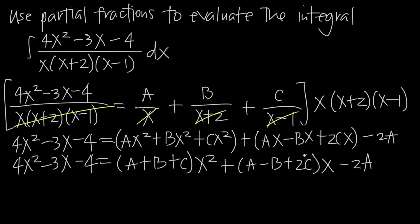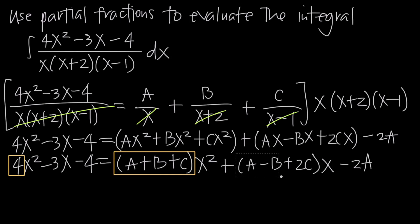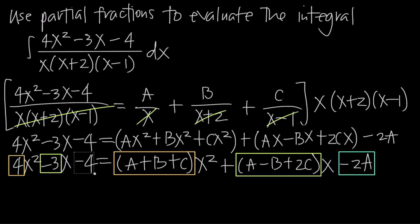We equate coefficients from the left and right hand sides. You can draw boxes around the coefficients to make this clearer. The x squared coefficient gives us: 4 equals A plus B plus C. The x coefficient gives: negative 3 equals A minus B plus 2C. And matching the constants gives: negative 4 equals negative 2A.